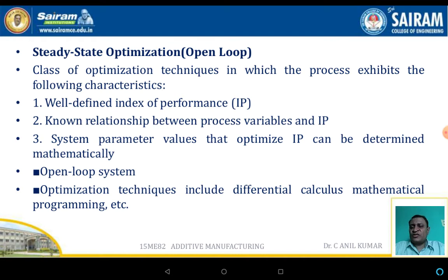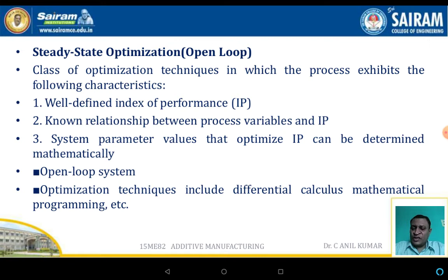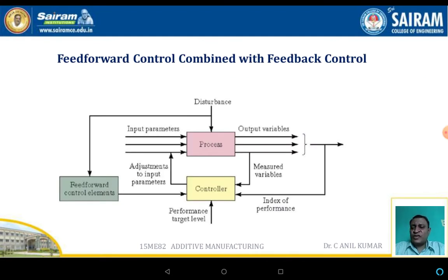The steady state control system is also something like an open loop — a class of optimization technique in which the process exhibits a well-defined index of performance and a known relationship between the process variables, input variables, and system parameters, so the optimized input can be determined mathematically. Open loop optimization techniques include differential calculus and mathematical programming. The schematic diagram shows the feed forward control combined with the feedback control system.